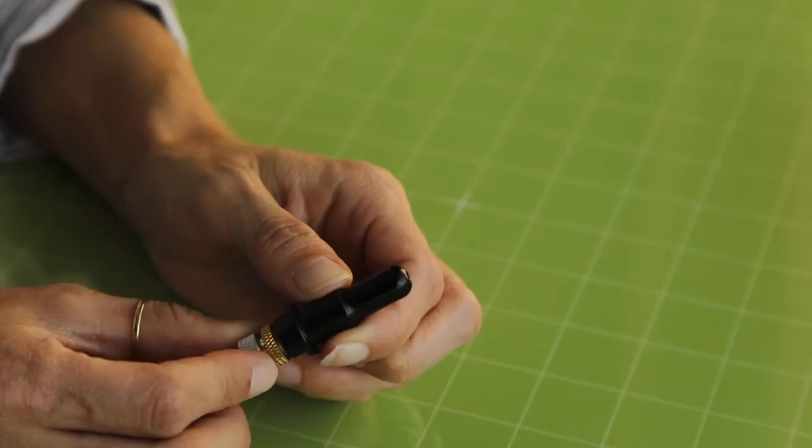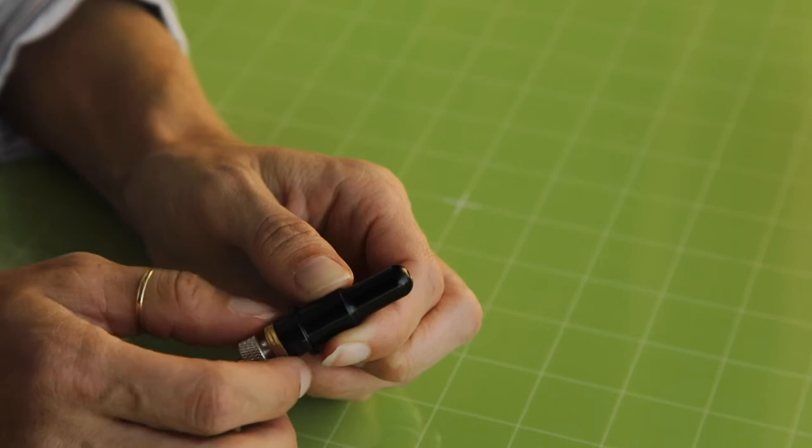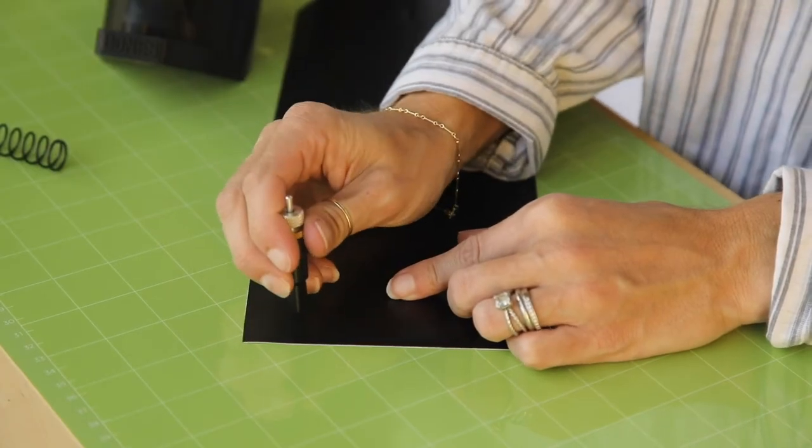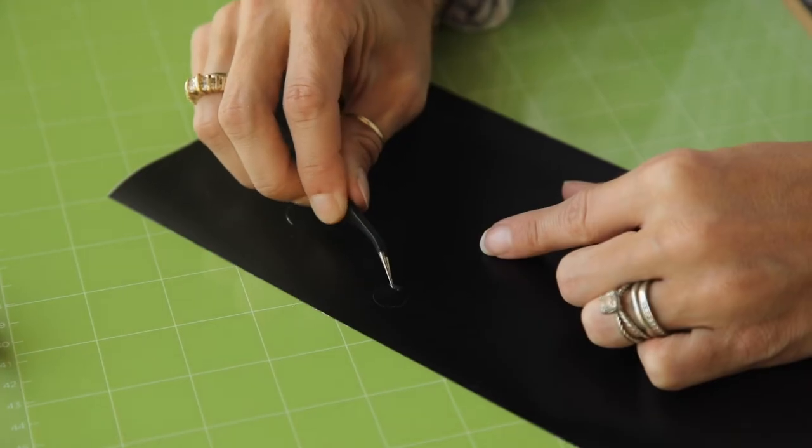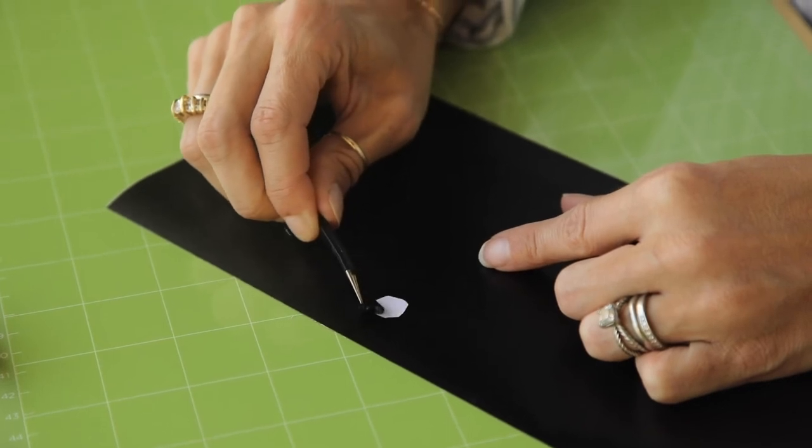Adjust the blade height as necessary and perform another test. The blade height is correct when the blade only cuts the vinyl medium and not the adhesive backing.